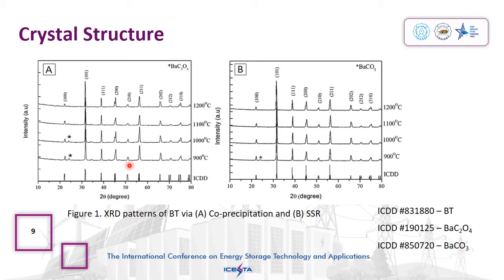Figure 1 shows the XRD patterns of BT from co-precipitation and solid state reactions at different sintering temperatures. According to the figure, both BT from co-precipitation and solid state reaction are in good agreement with the ICDD database number, which shows a tetragonal perovskite structure of BT. However, there is the presence of impurity phases in BT from both co-precipitation and solid state reaction, which are identified according to the ICDD database.